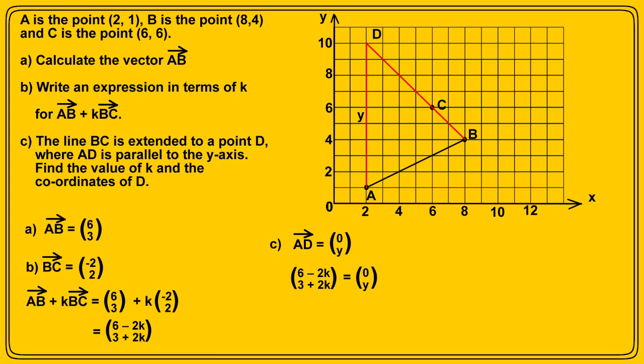And this gives us the simultaneous equations: 6-2K equals 0, and 3+2K equals y. From the first equation, we get K equals 3, which is the answer to half of part C. And substituting this in the second equation gives y equals 9. But y is the vertical distance from A to D, and A has coordinates (2,1), so the coordinates of point D must be (2,10). And that's our final answer.